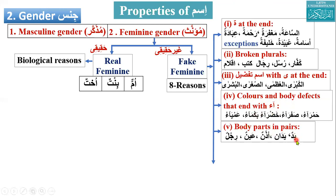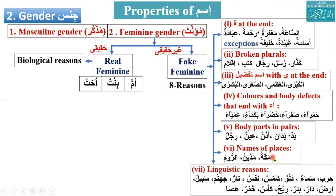The fifth reason is body parts that come in pairs, like two hands, two eyes, two feet — these are all considered feminine gender. The sixth reason is names of places; they are also considered feminine, like Makkah, Madyan, and al-Rum — all names of places are considered feminine.